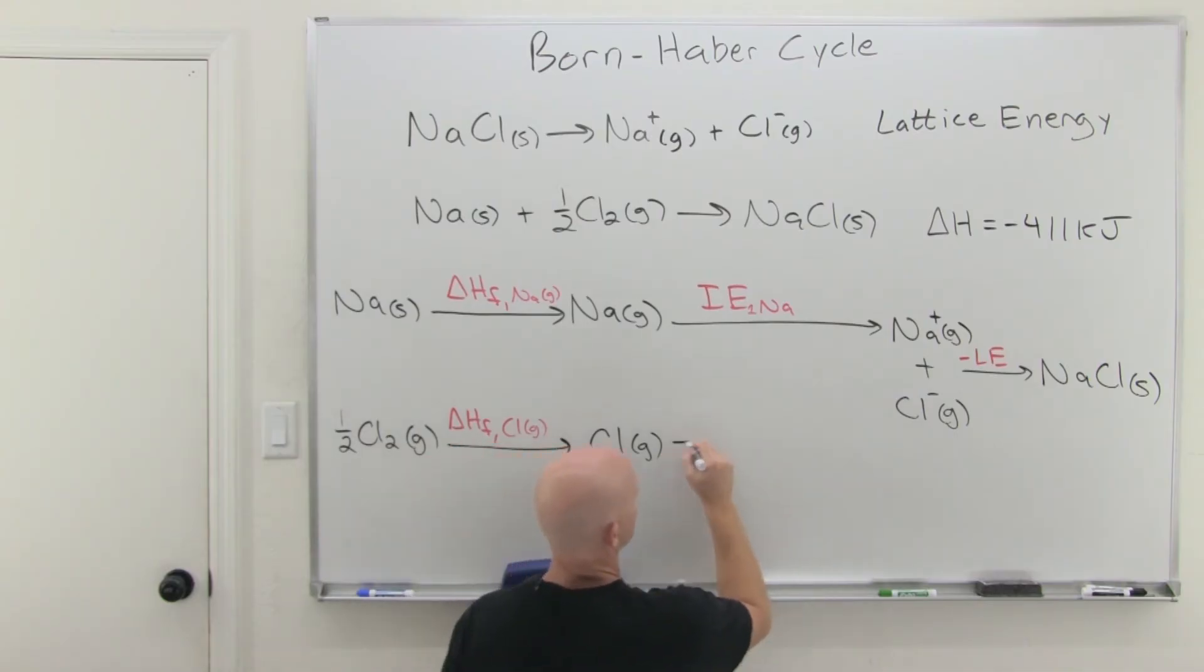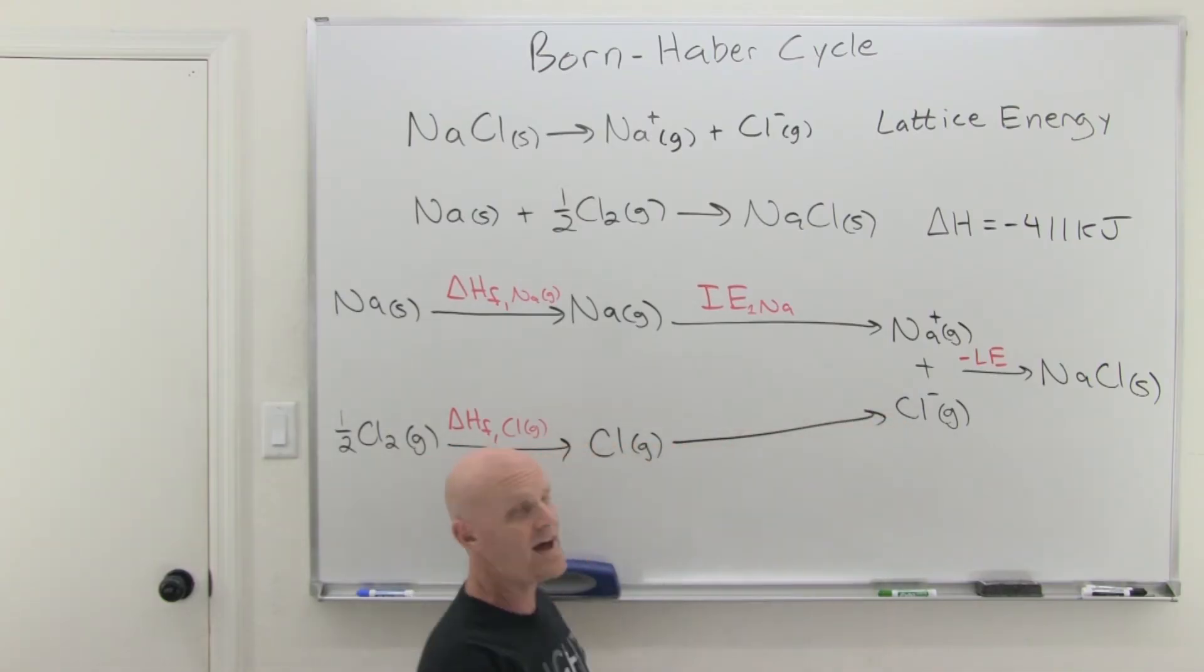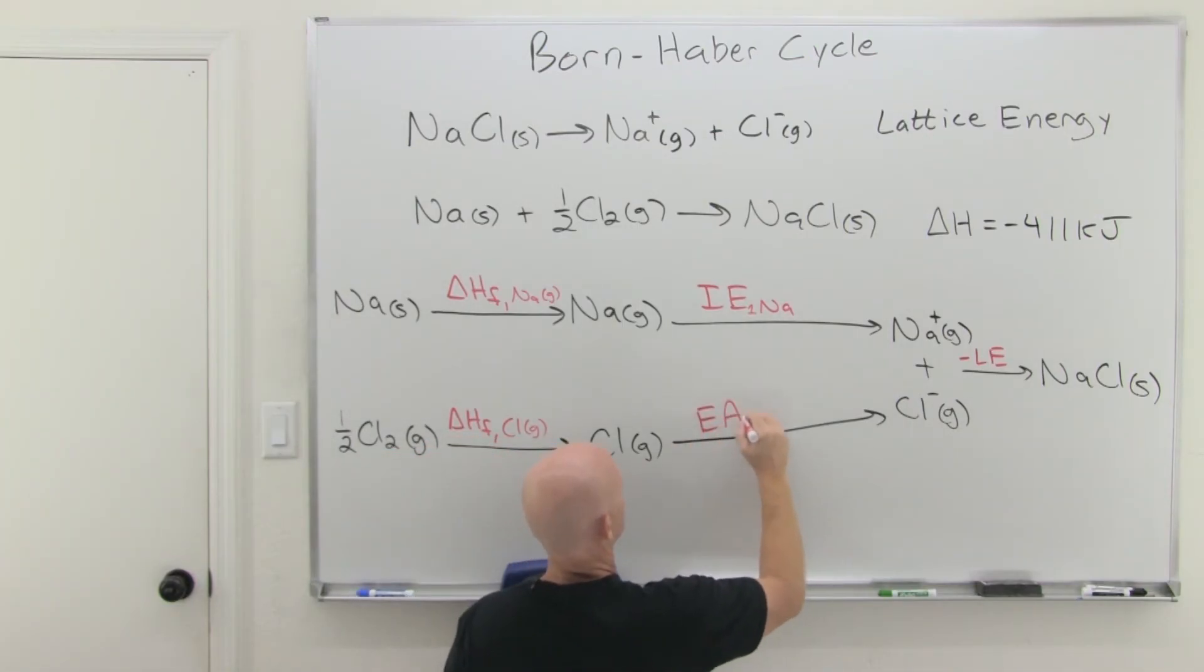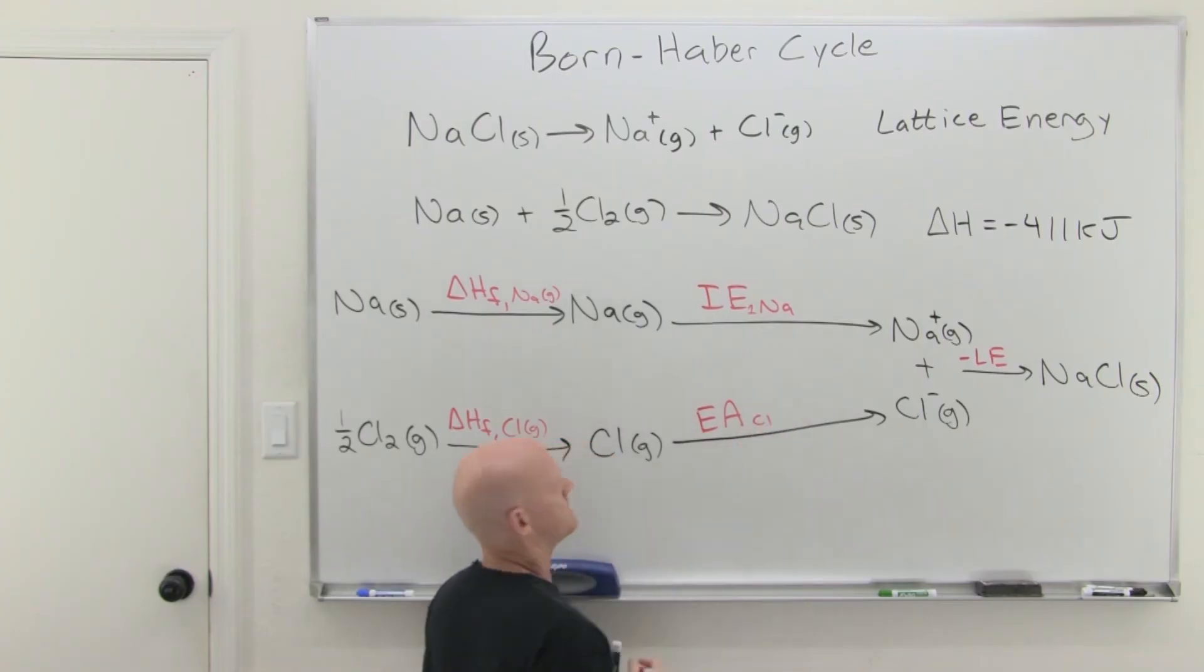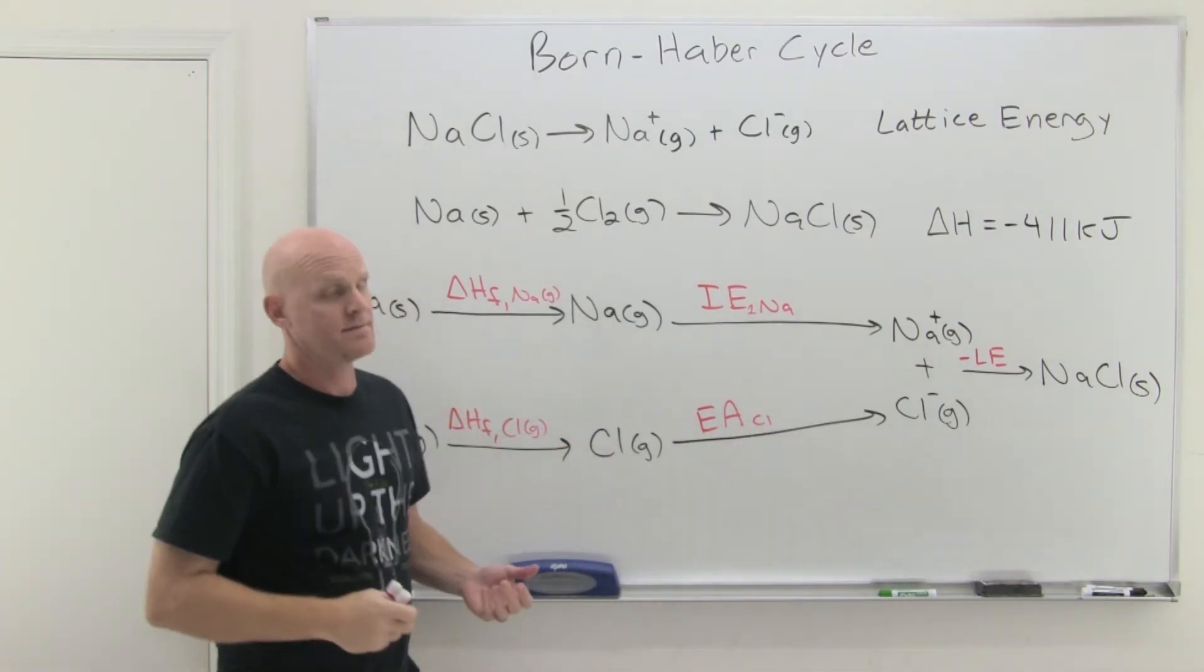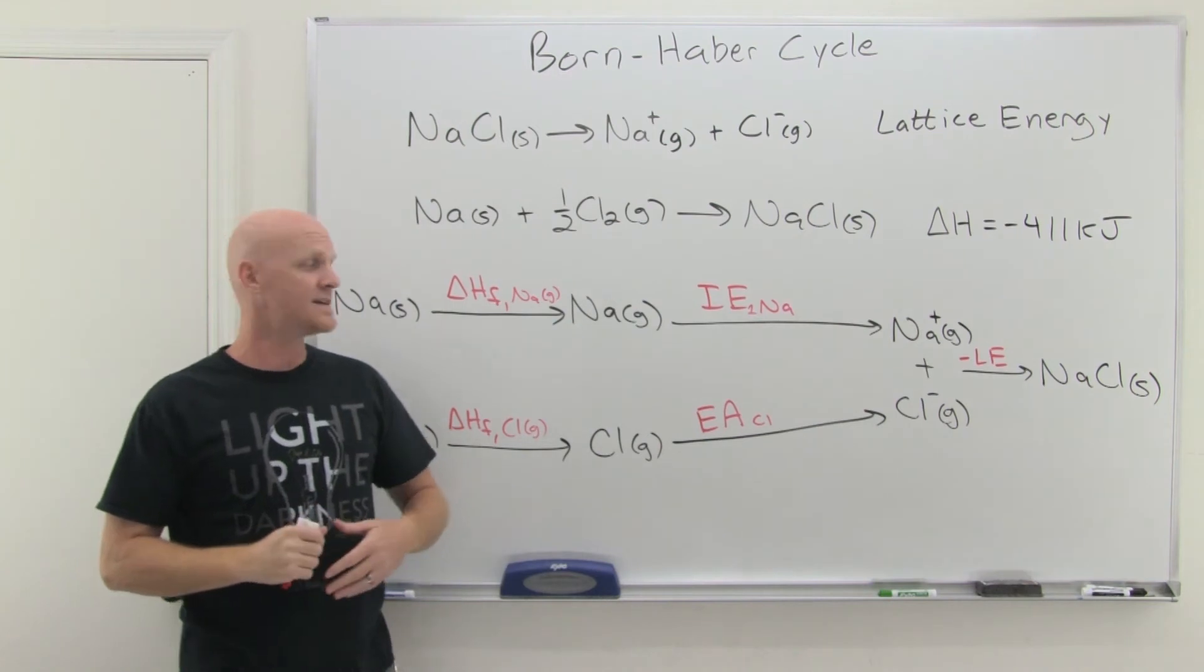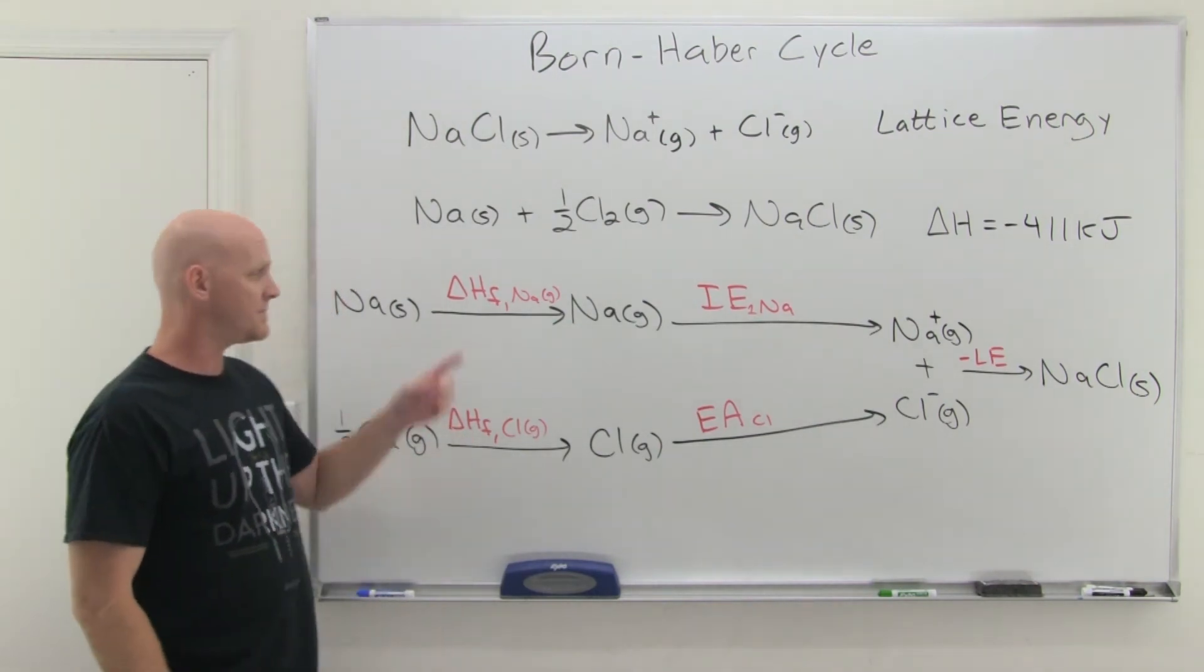And we're halfway there to forming the chloride ion gas. And to form the chloride ion gas now, now we just need to add an electron to gain an electron. That's not ionization energy. That's electron affinity. And that's reported in a table as well.